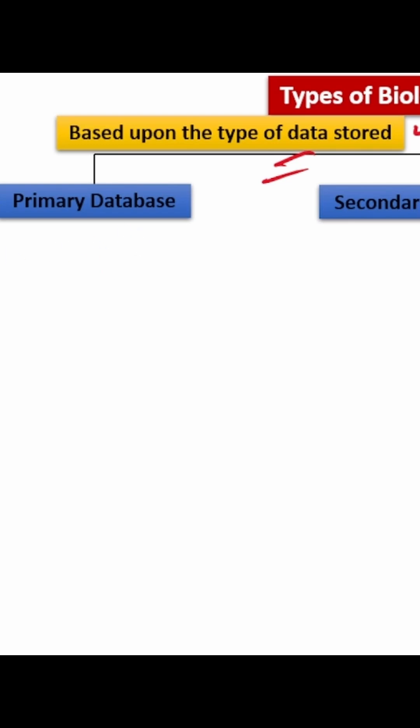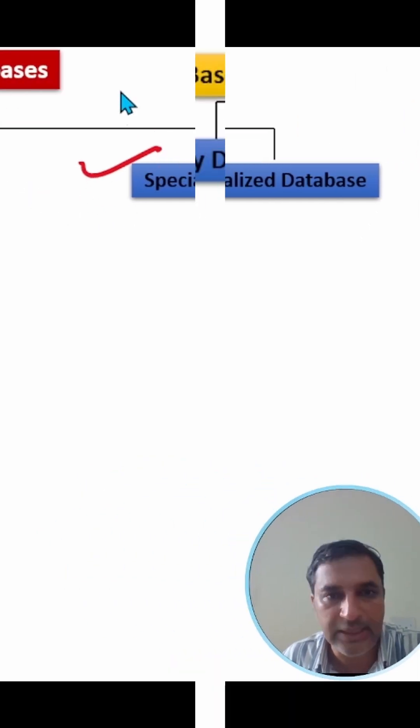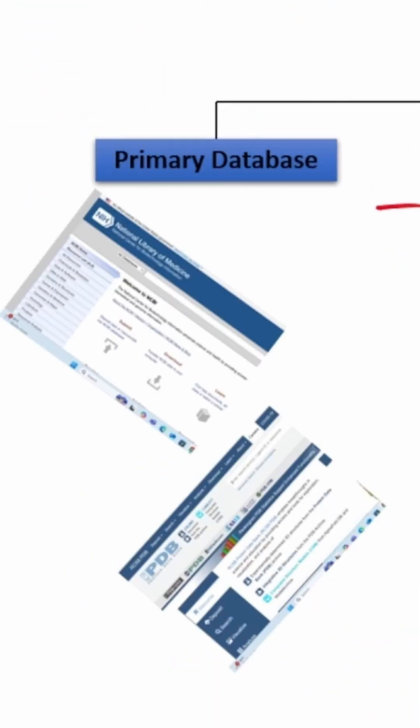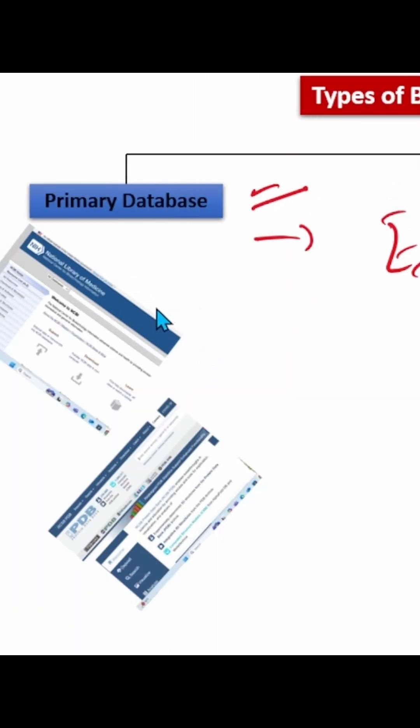There are three major categories of biological databases: first is primary database, second is secondary database, and third is specialized database. Primary databases contain information which is extracted from experiments. An example of a primary database is NCBI or the Protein Data Bank.